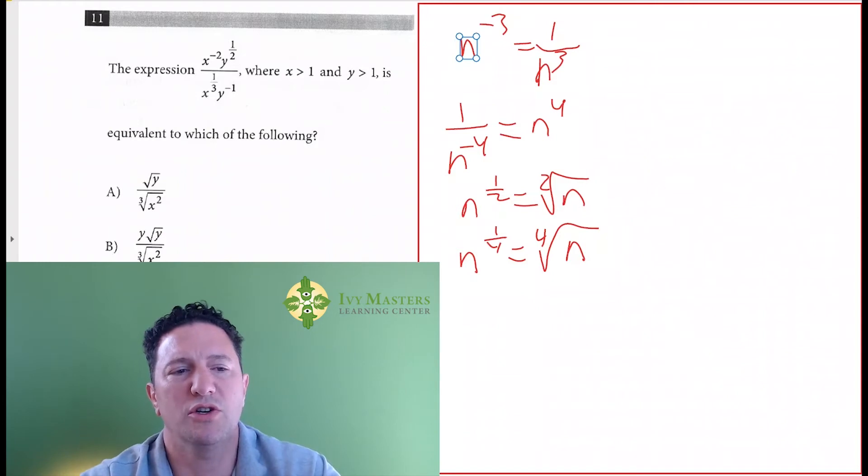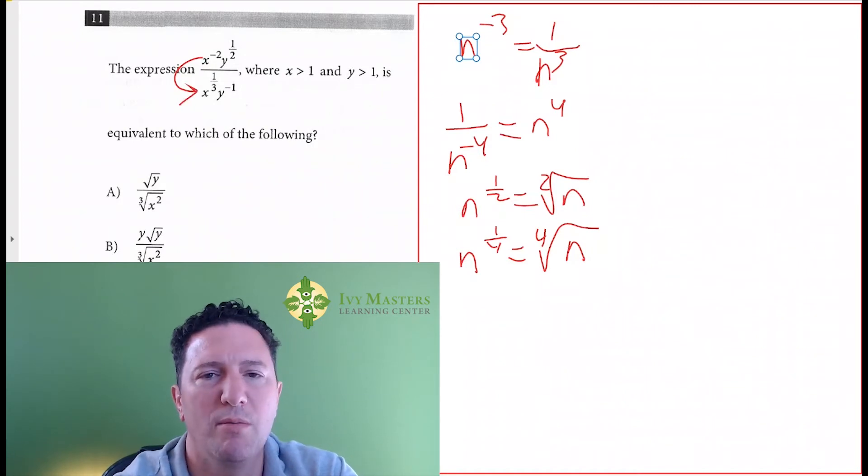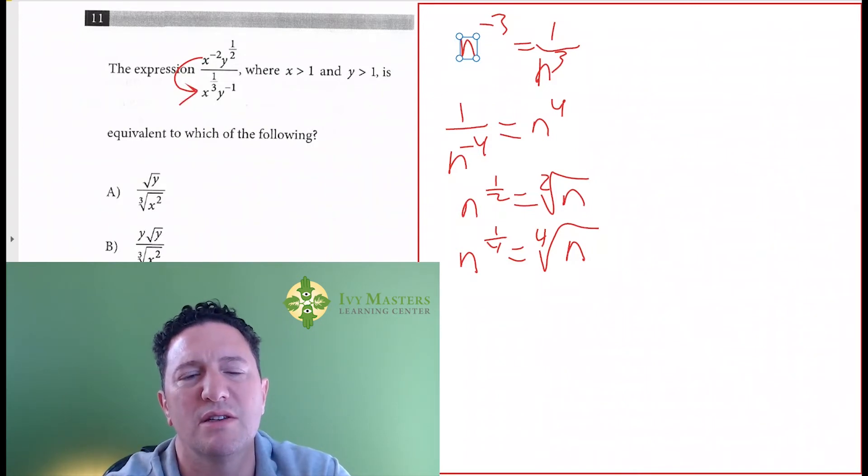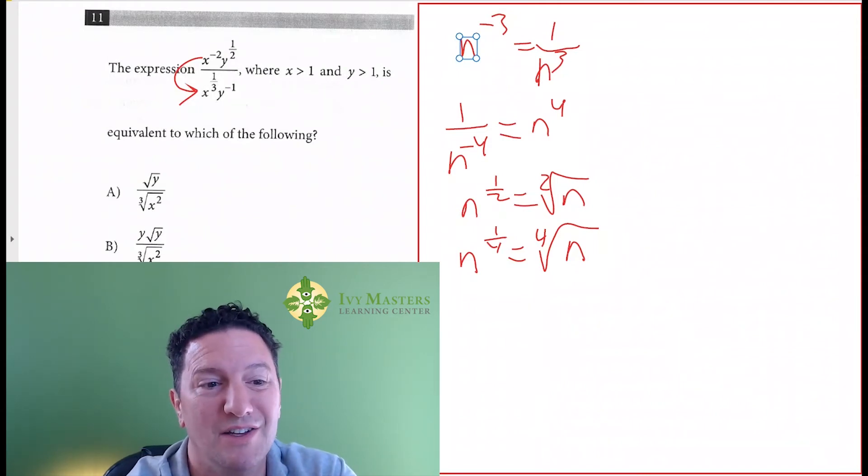So looking at this question, what do we got? If we've got x to the negative 2 in the top, it's got to be x to the positive 2 in the bottom. Always do these things in pieces as you go. If we need x squared in the bottom, it looks like our answer is D.